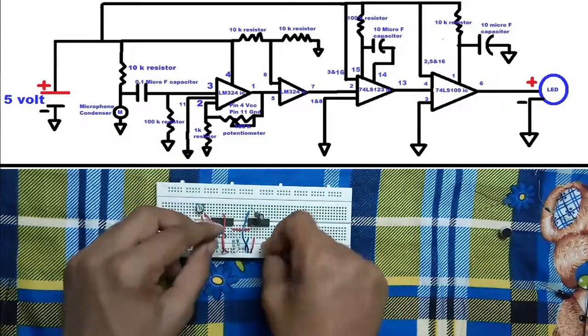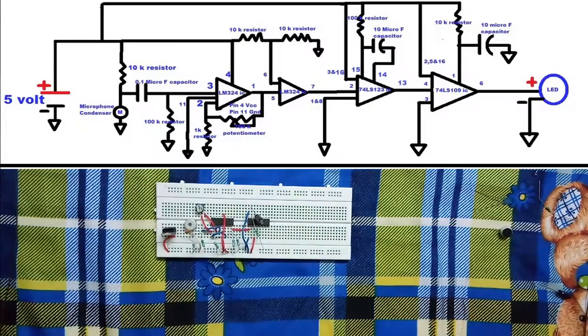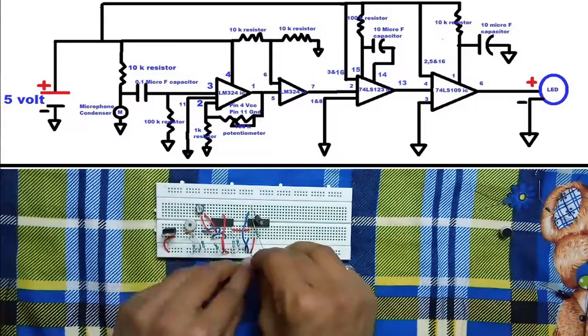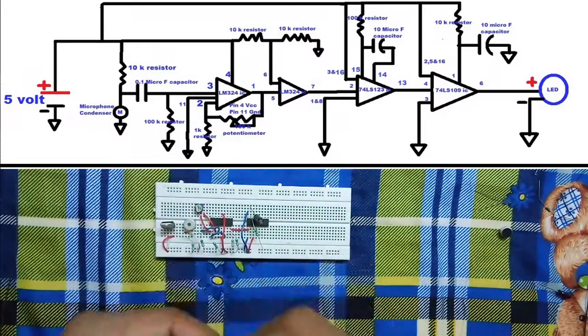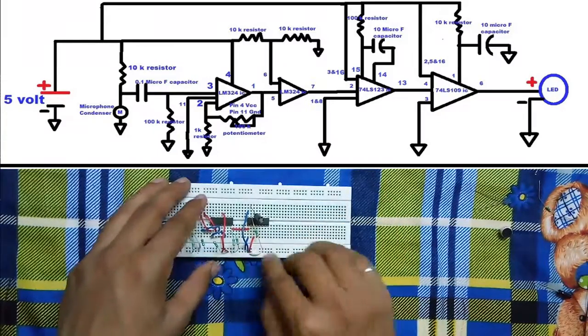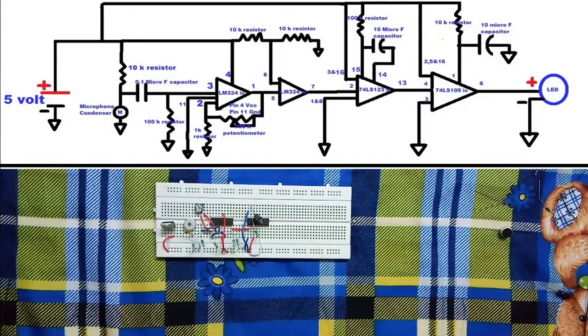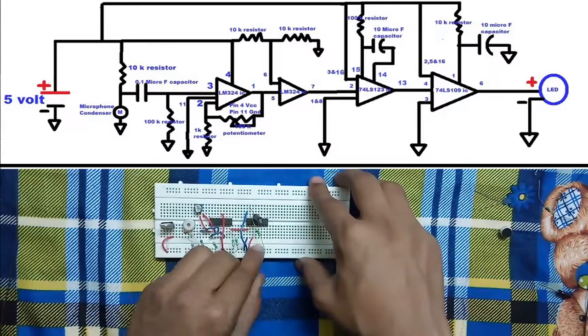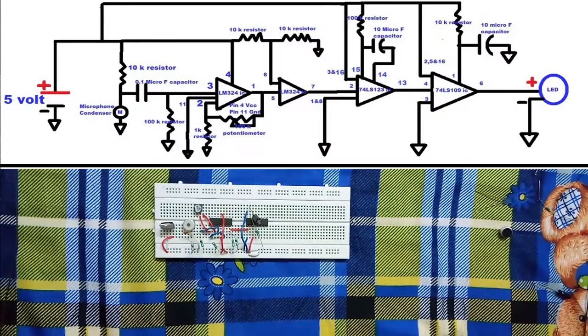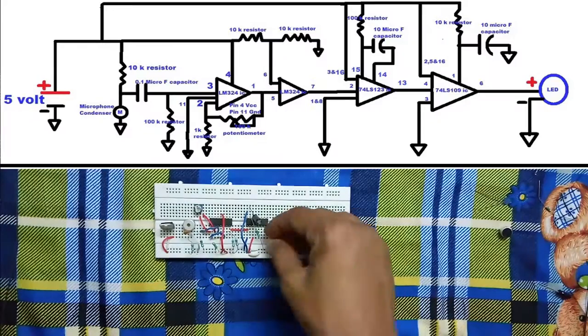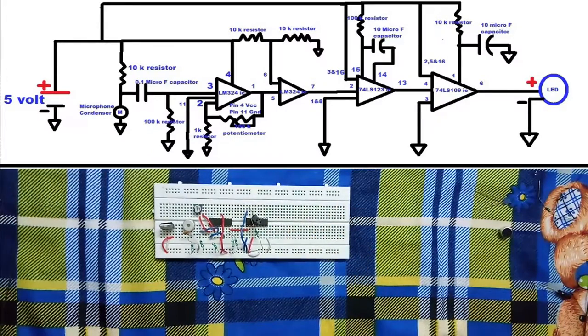Connecting a 10 microfarad capacitor across pins 15 and 14. The long pin goes in pin 15 and the short pin goes in pin 14. Providing VCC through a 100K resistor to pin number 15. Connecting pin 8 of 74LS123 IC to ground.